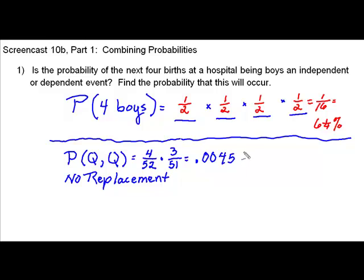which when changed to a percent would be less than half a percent. Not a great chance of this happening. But that's an example and a comparison between independent and dependent events.